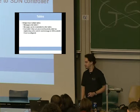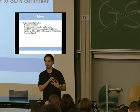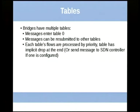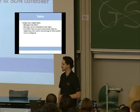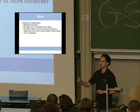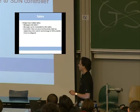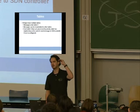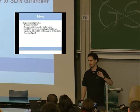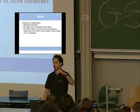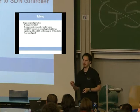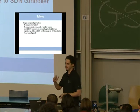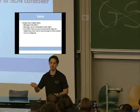You can also resubmit to another table. A table is basically just a group of flows, and we can have a bunch of different tables belonging to the same virtual switch — it's a convenient way to manage lots of flows. All messages enter the first table, which is table zero. Messages can be resubmitted from table zero to any other table. Flows are processed according to their priority. If a message comes in on table zero and no flows match, the message is either dropped or — if there's an SDN controller configured, which with regular Neutron there isn't — forwarded. The default is to drop it.